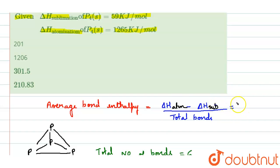Atomization is 1265 kilojoules, and sublimation is 59 kilojoules, divided by the total number of bonds, which is 6. So the answer on solving is 201 kilojoules per mole.